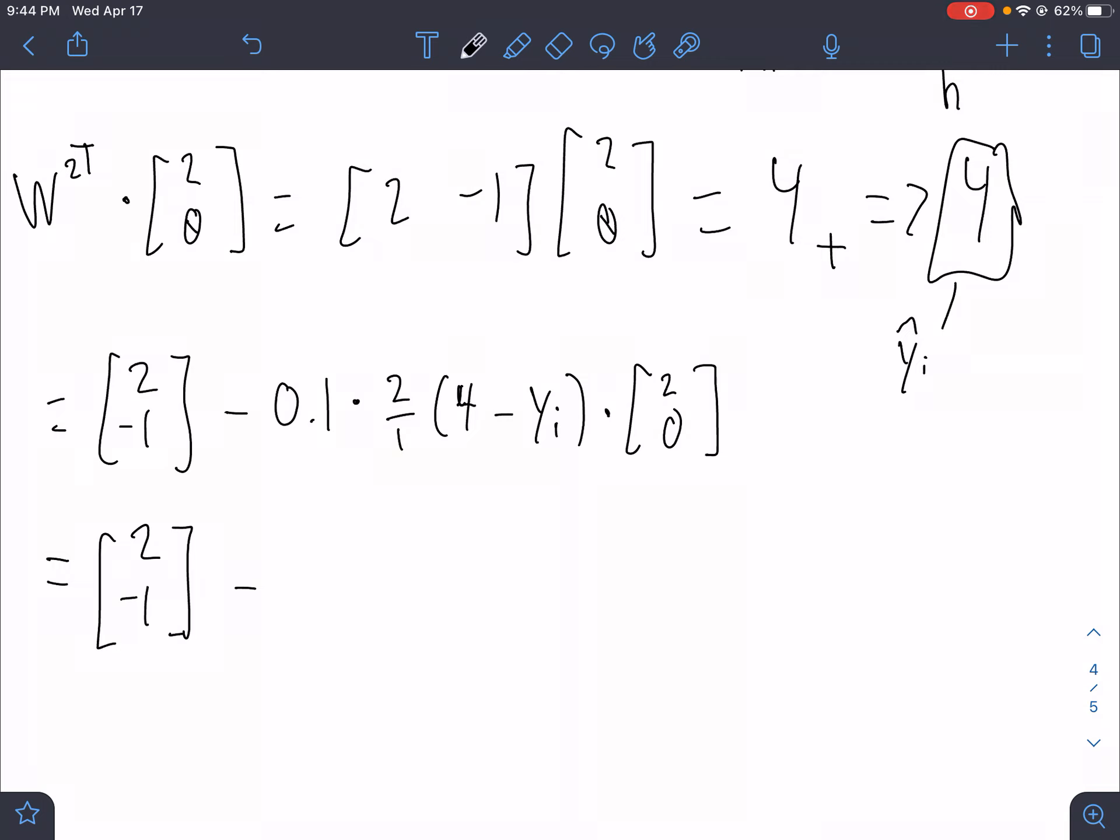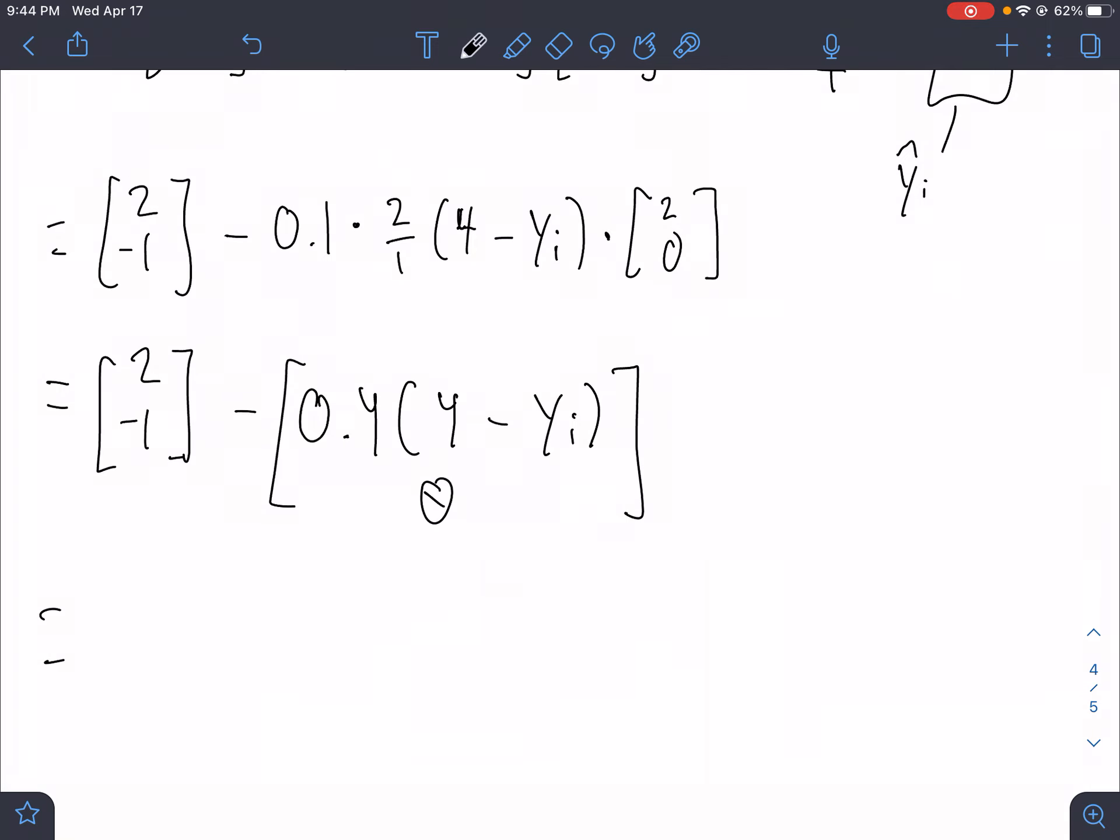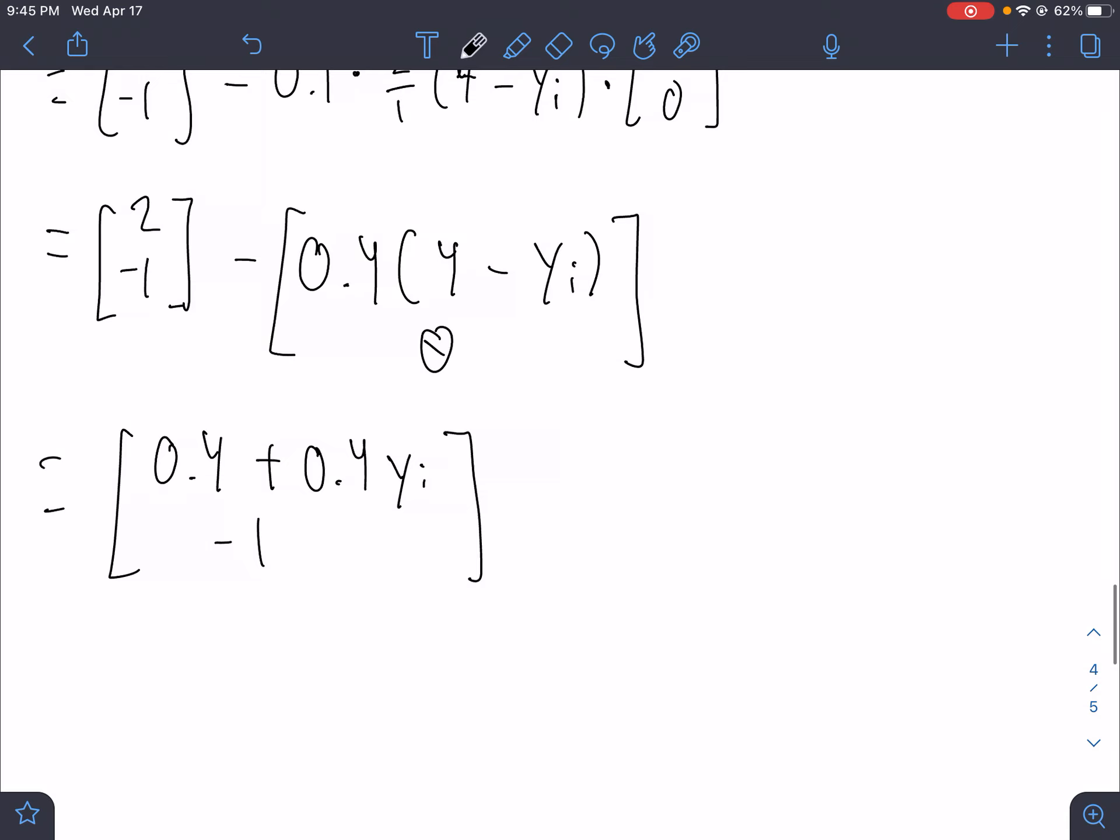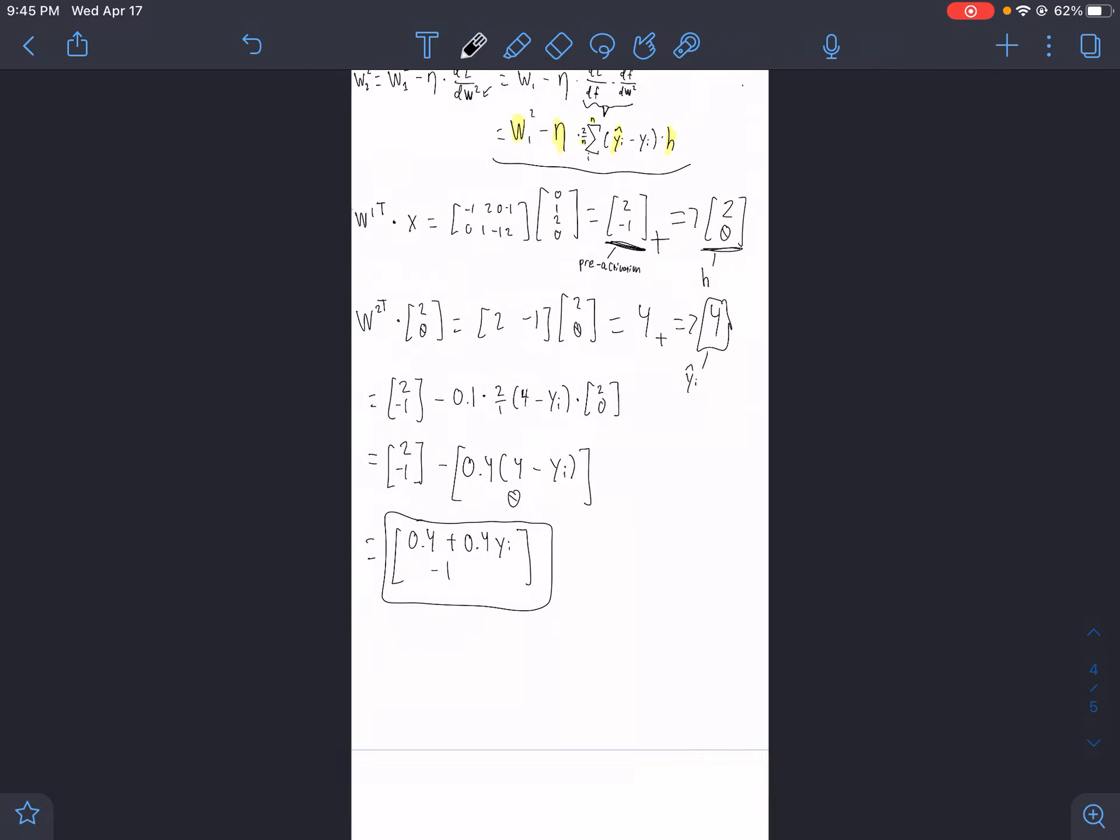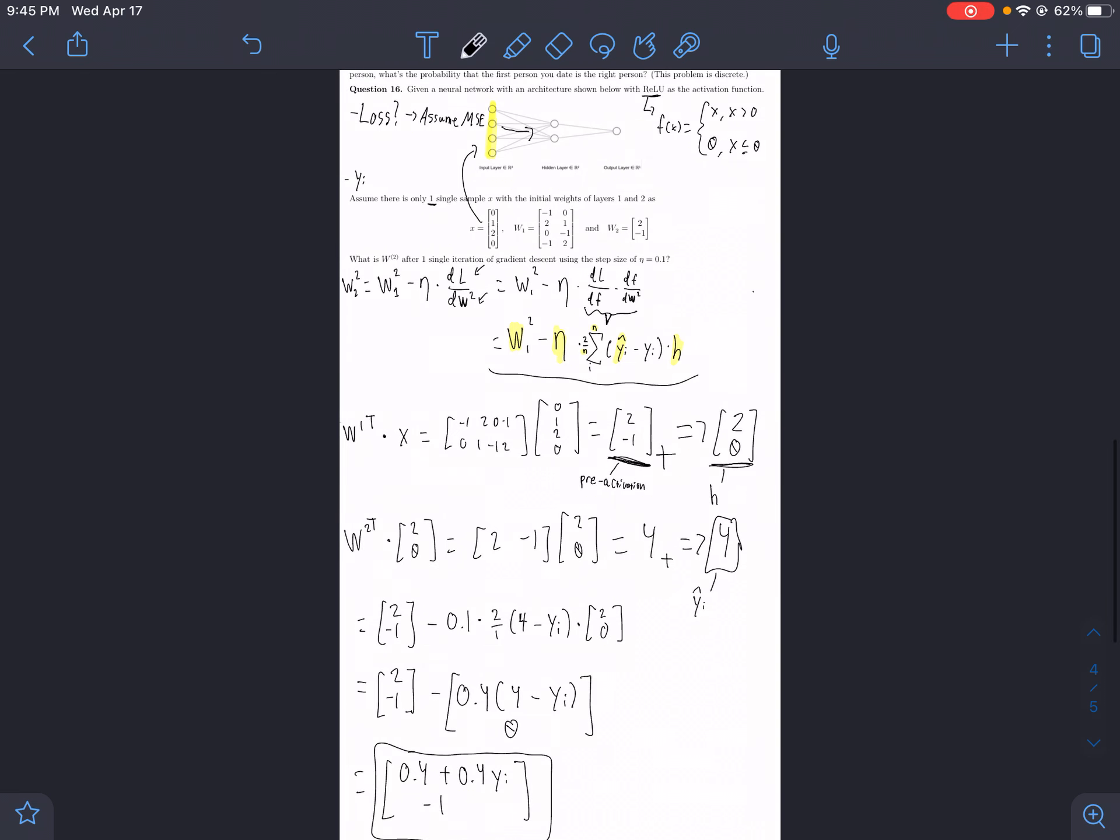I believe this is 2 times 2 times 0.1, so 0.4 times 4 minus yi 0, which is going to give us 2 minus 0.4 times 4 which is 1.6. So that is going to be 0.4, and then we're minus a negative so we'd add 0.4 yi. We have a negative 1 on the bottom minus 0, so it's just negative 1. This is our final state of w2, 2. That was a bit of a long one, but hopefully not too complicated. Good luck on your final.